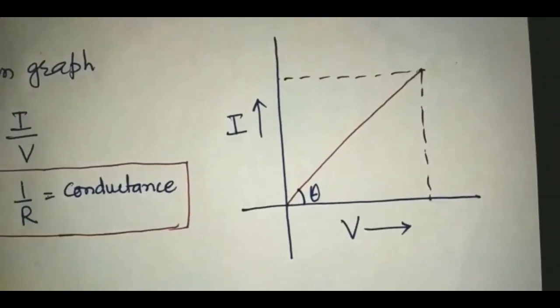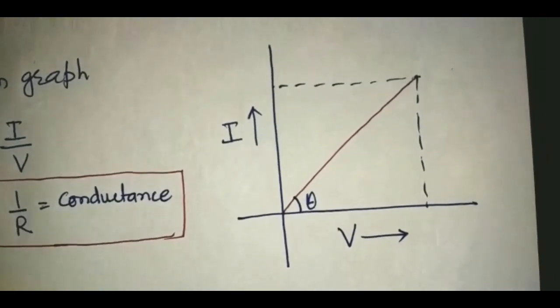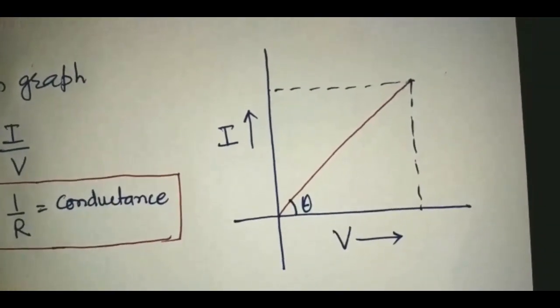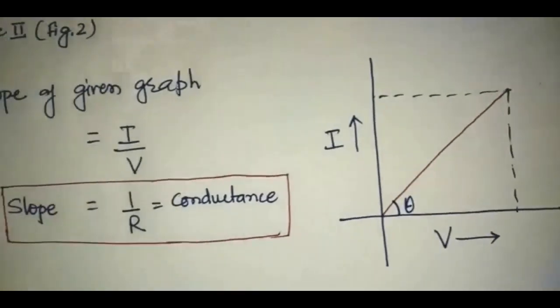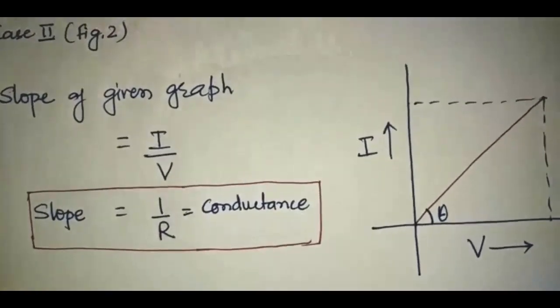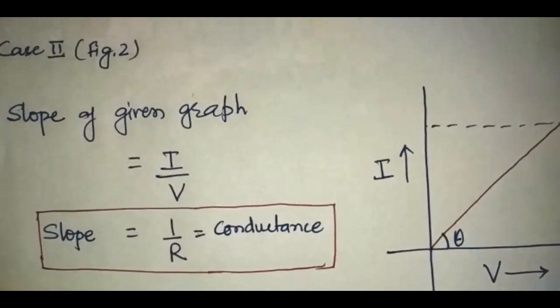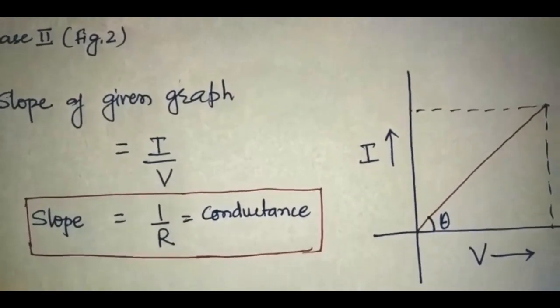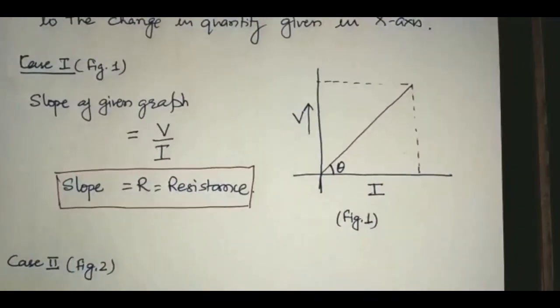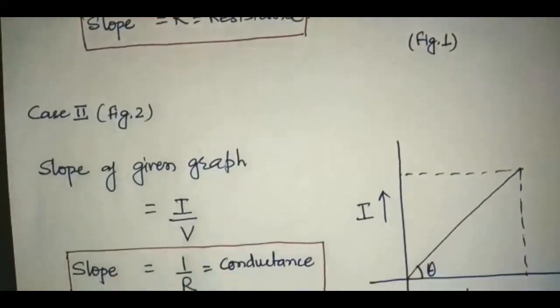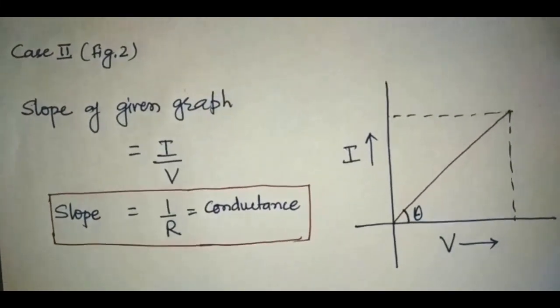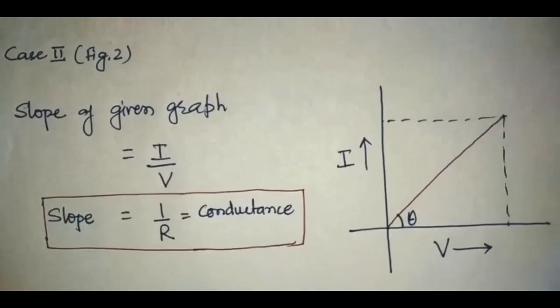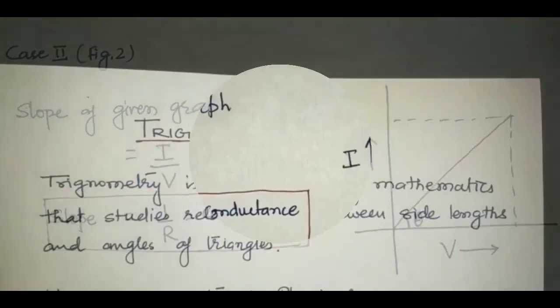Now see another example. Here in this case, the current is taken in y-axis, voltage is taken in x-axis. Therefore the slope of this graph equals I/V, which equals 1/R, and we know that 1/R is known as conductance. So the slope of the first graph is resistance and the slope of the second graph is conductance. In this way we can find the slope of any graph.